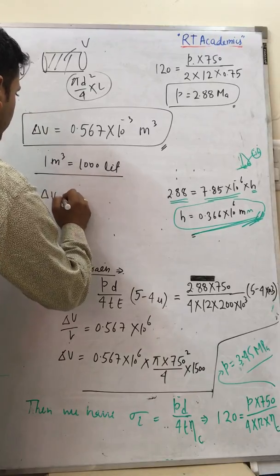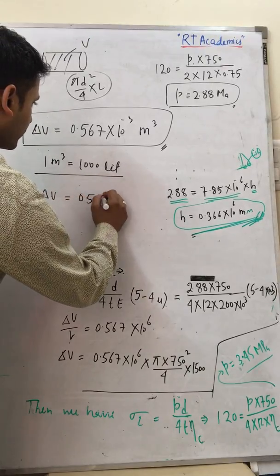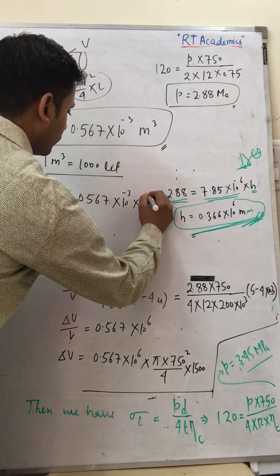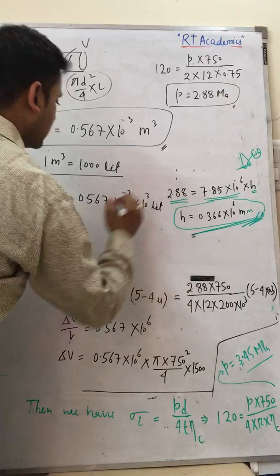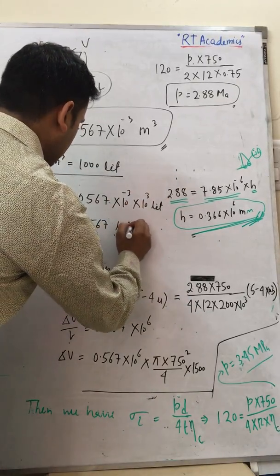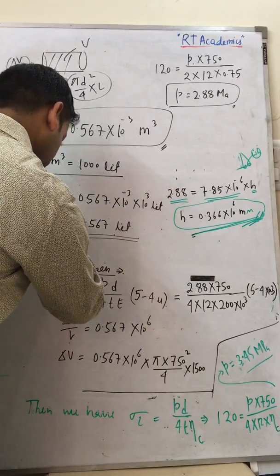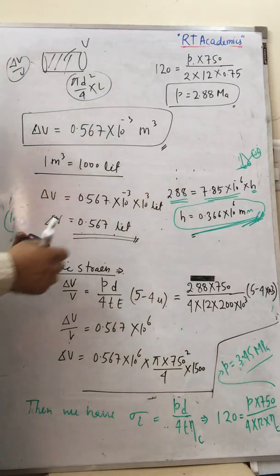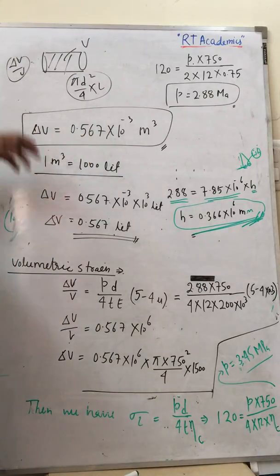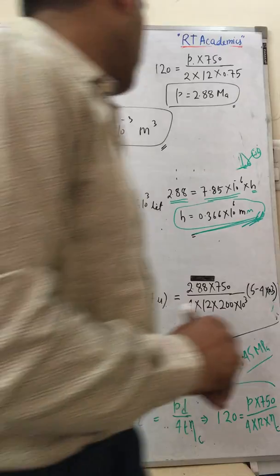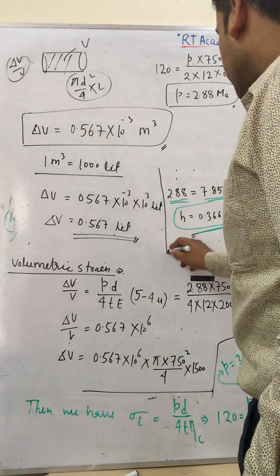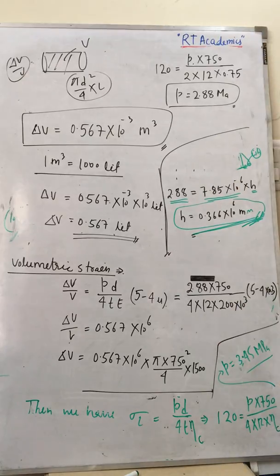Converting to liters: since 1 m³ = 1000 liters, ΔV = 0.567 × 10⁻³ × 10³ = 0.567 liters. So the final answer for the change in volume of the cylinder is 0.567 liters.